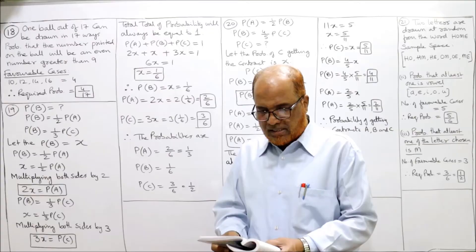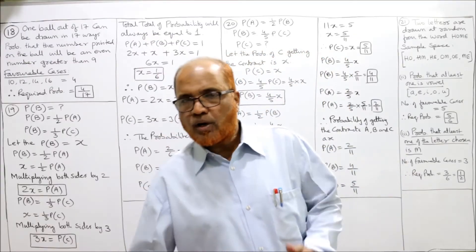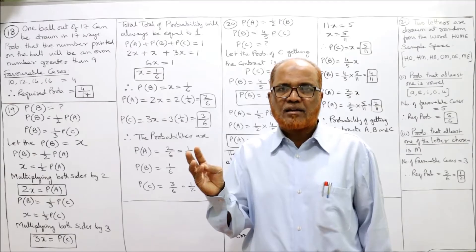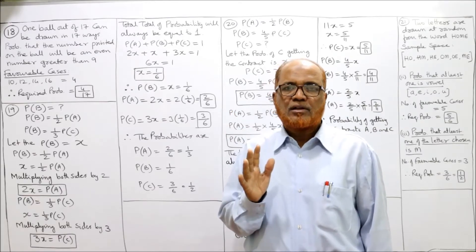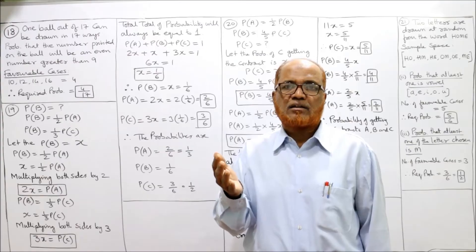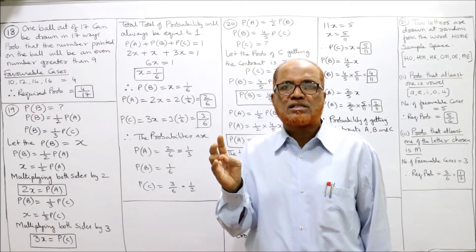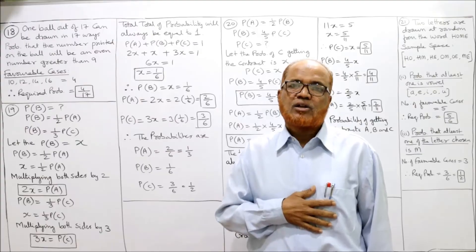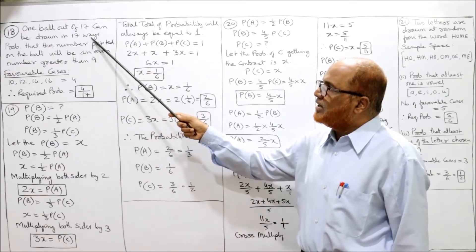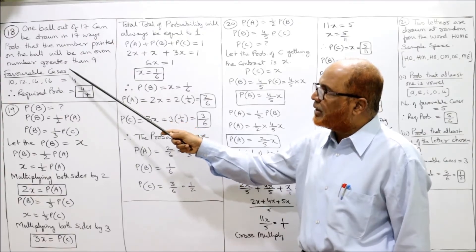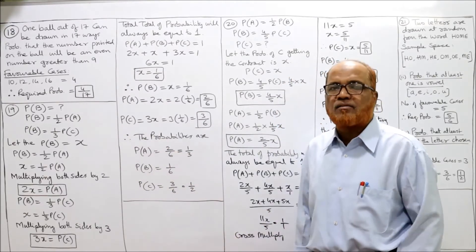So the denominator will be 17. Now what are our favorable cases? We want a number printed on the ball which should be an even number greater than 9. So greater than 9, even numbers are: 10, 12, 14, 16. The maximum number of balls is 17 only. So the four favorable cases are 10, 12, 14, and 16. One ball out of 17 can be drawn in 17 ways. So the required probability is 4 by 17. It's a very simple problem.